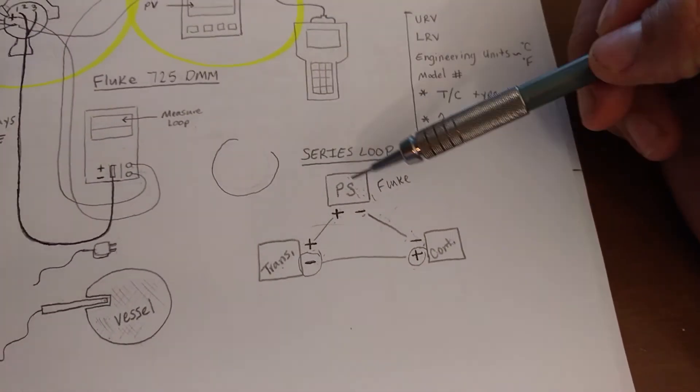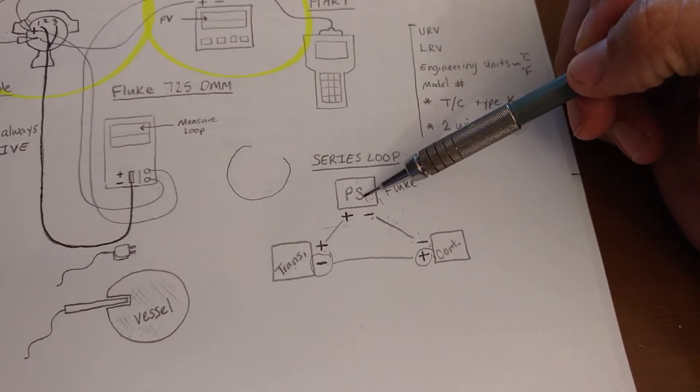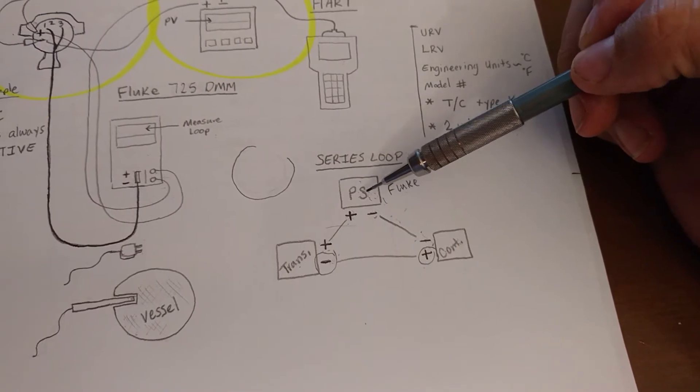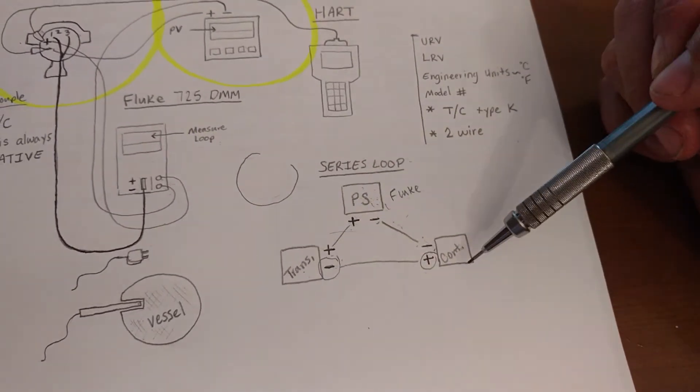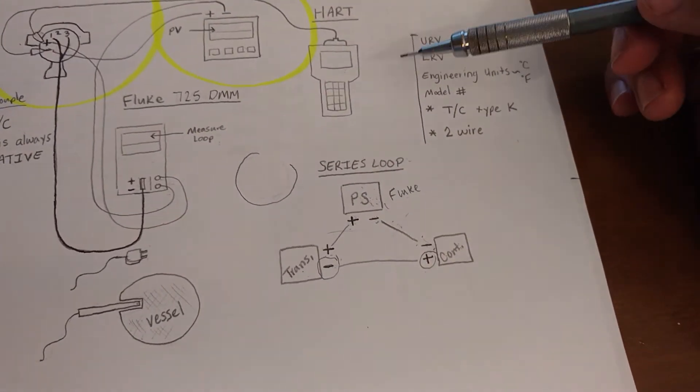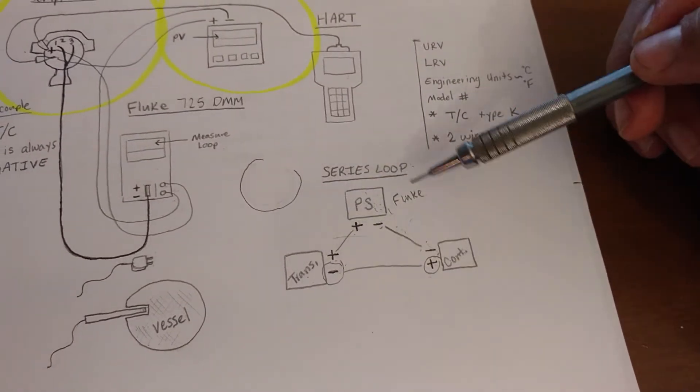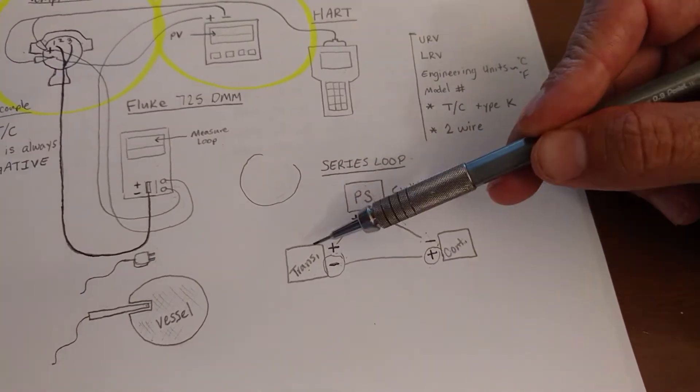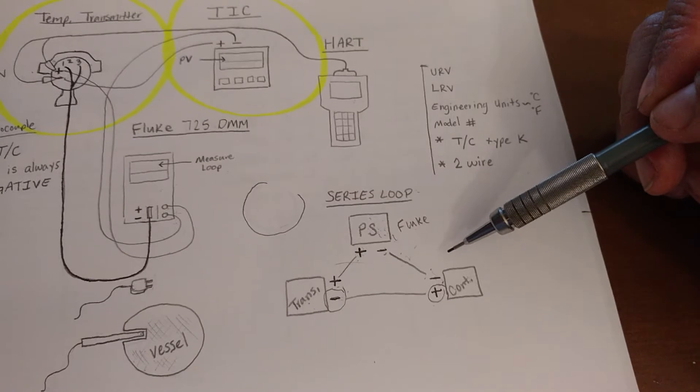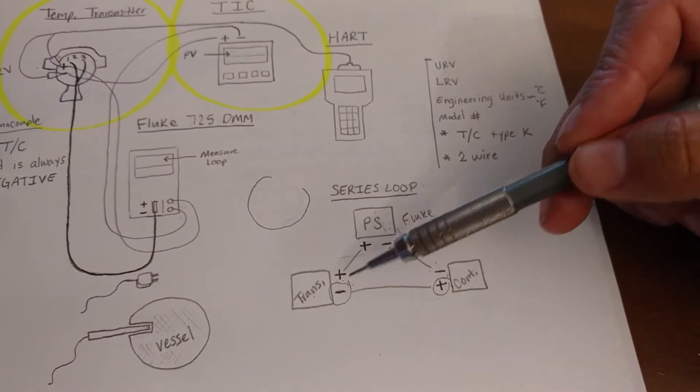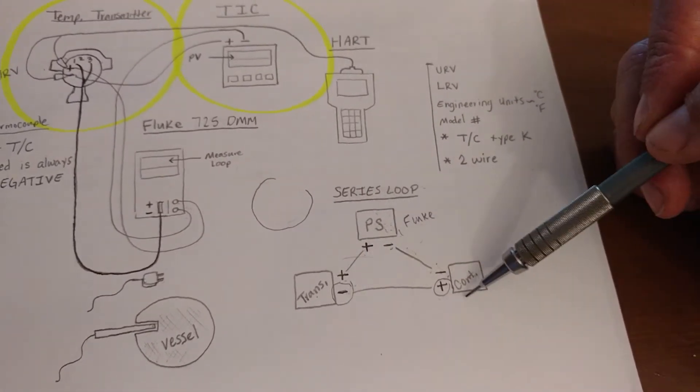So we're going to look at our power source. And what are the other elements? The transmitter and the controller. So how are we going to complete this circle? Well, each element right here is going to have two terminals - a positive and a negative, a positive and a negative, a positive and a negative.